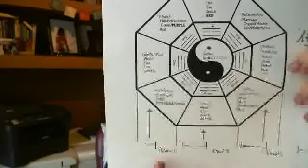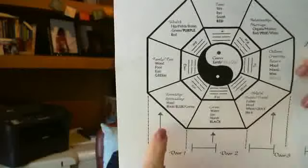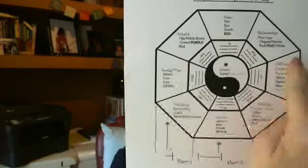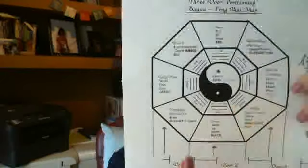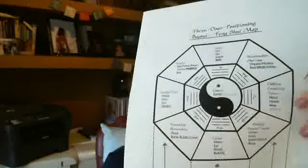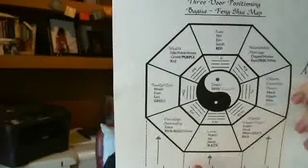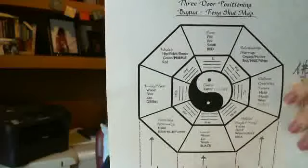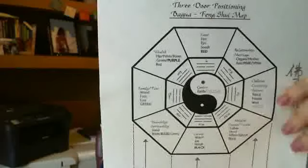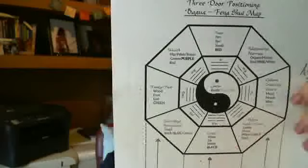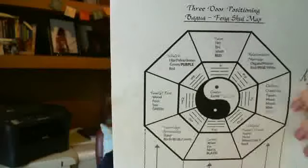The upper left-hand corner will always be wealth, and the upper right-hand corner will always be relationships. If the door comes in through the middle section, the door enters through career. If the door is in the lower left-hand corner, it enters through spirituality. Using this map we can gauge what area of your space — your office, your home, your property — corresponds to what.